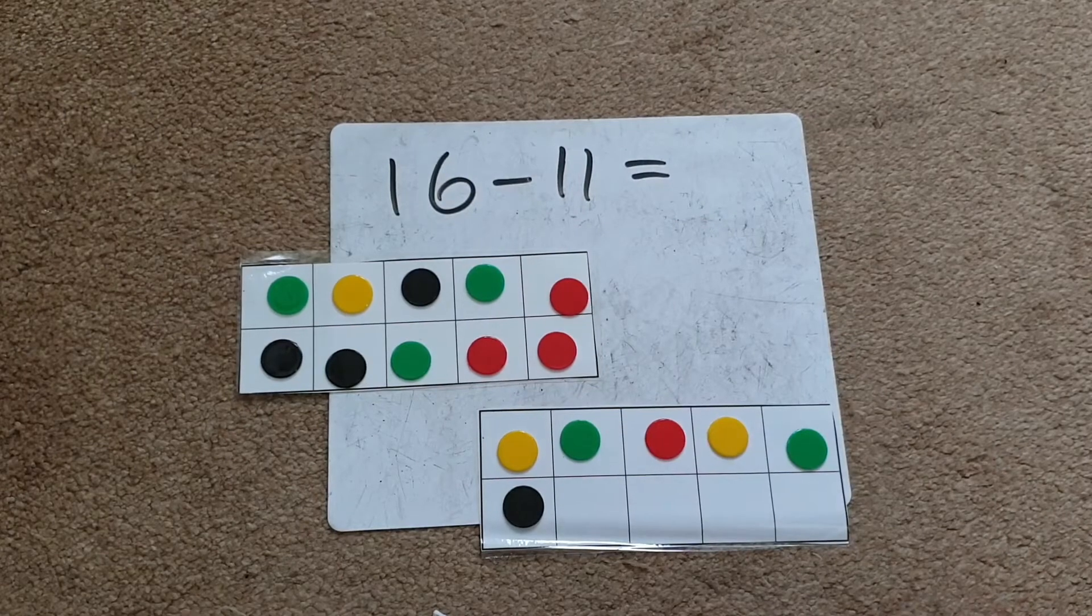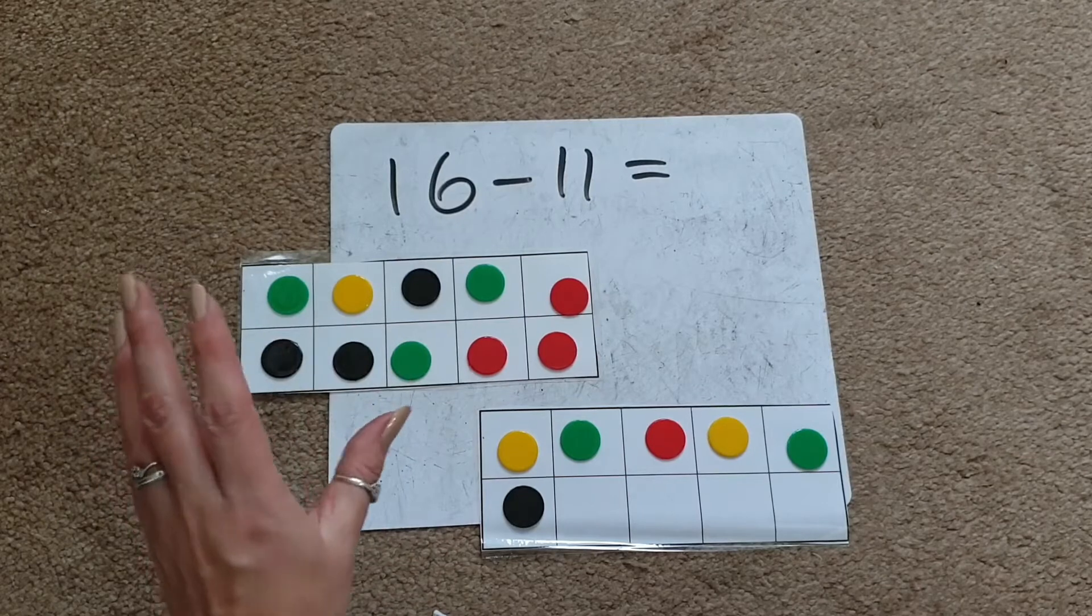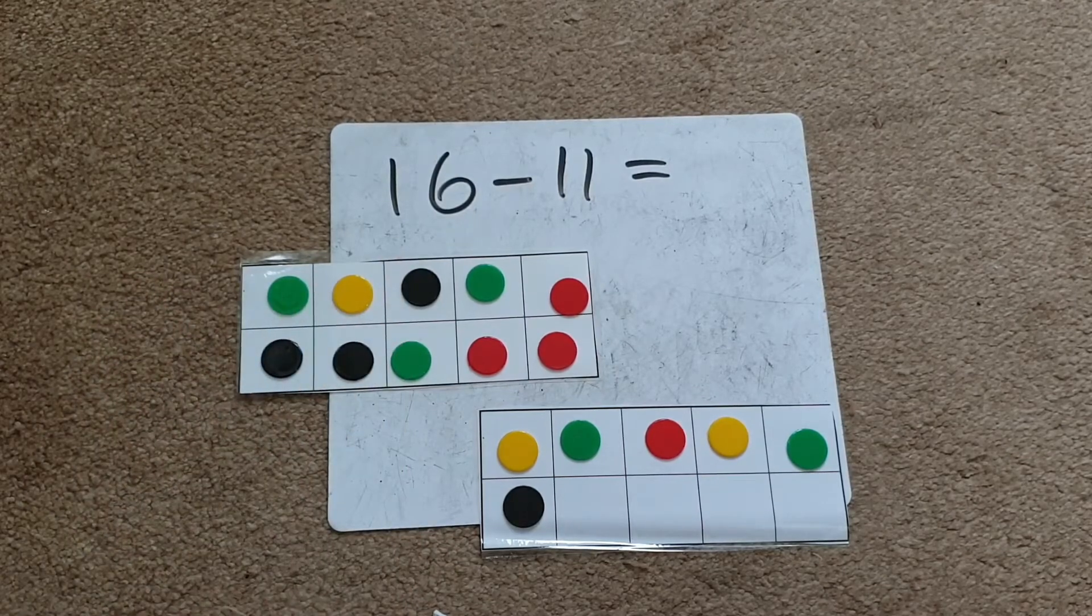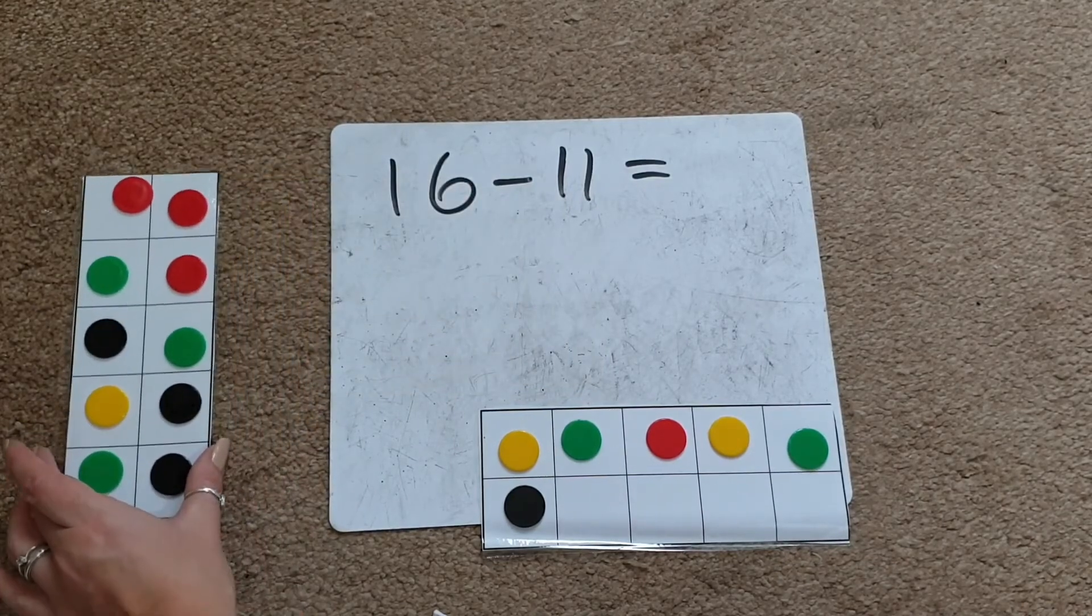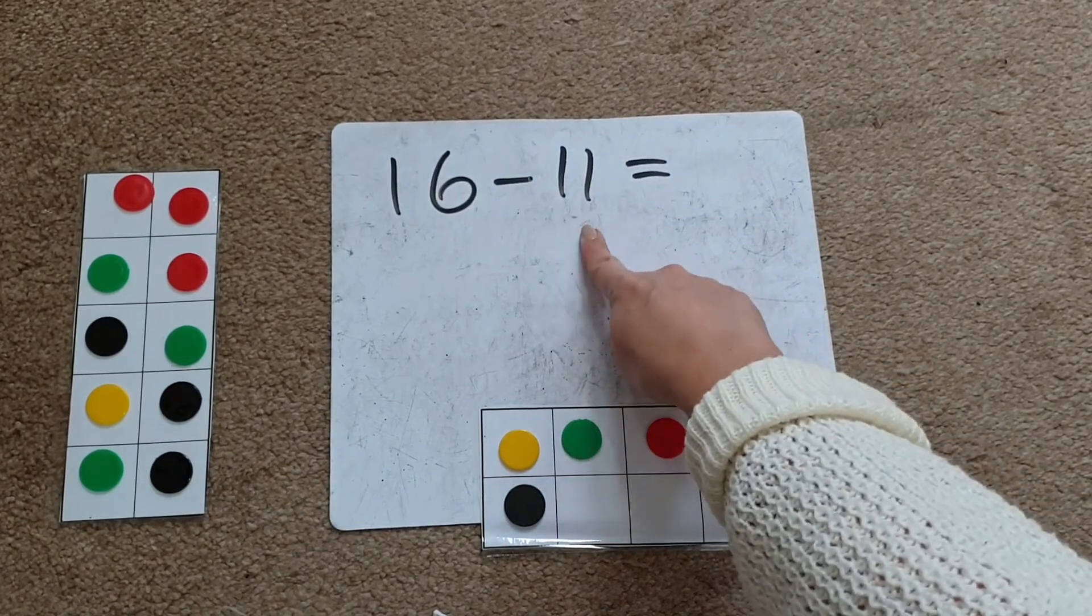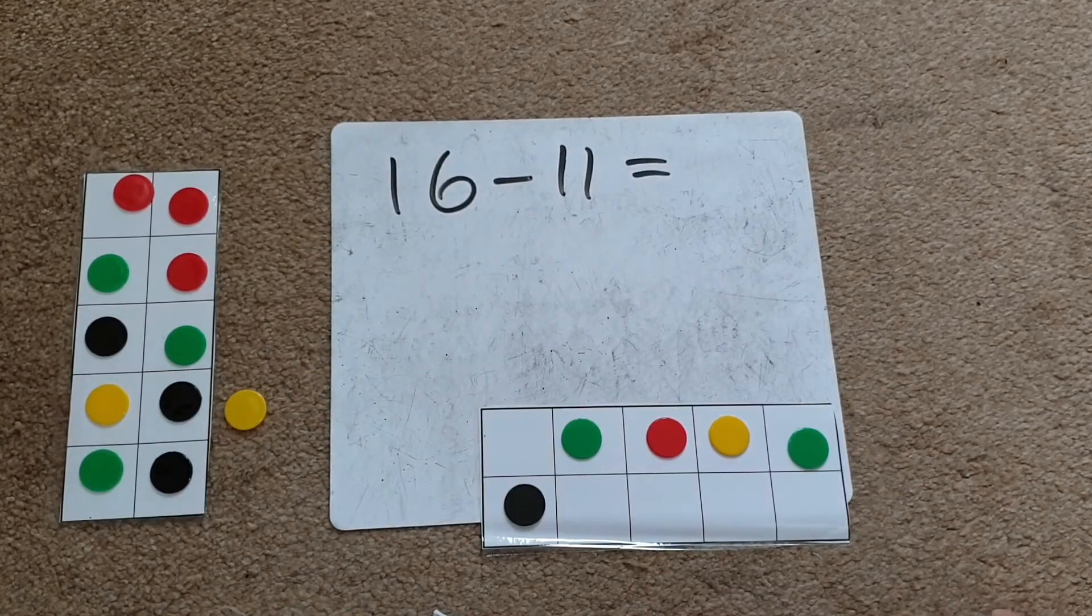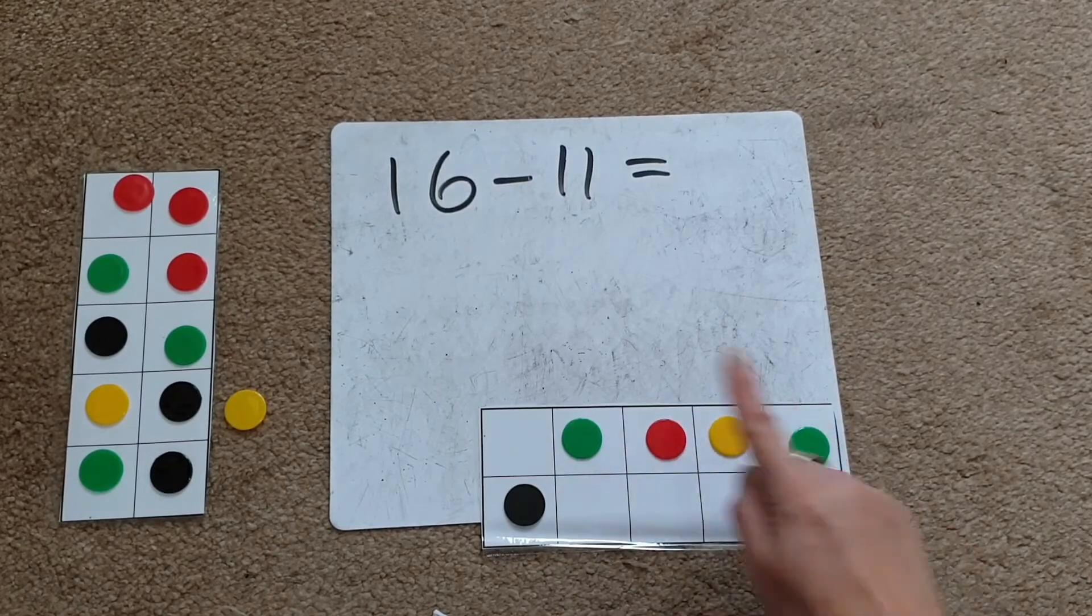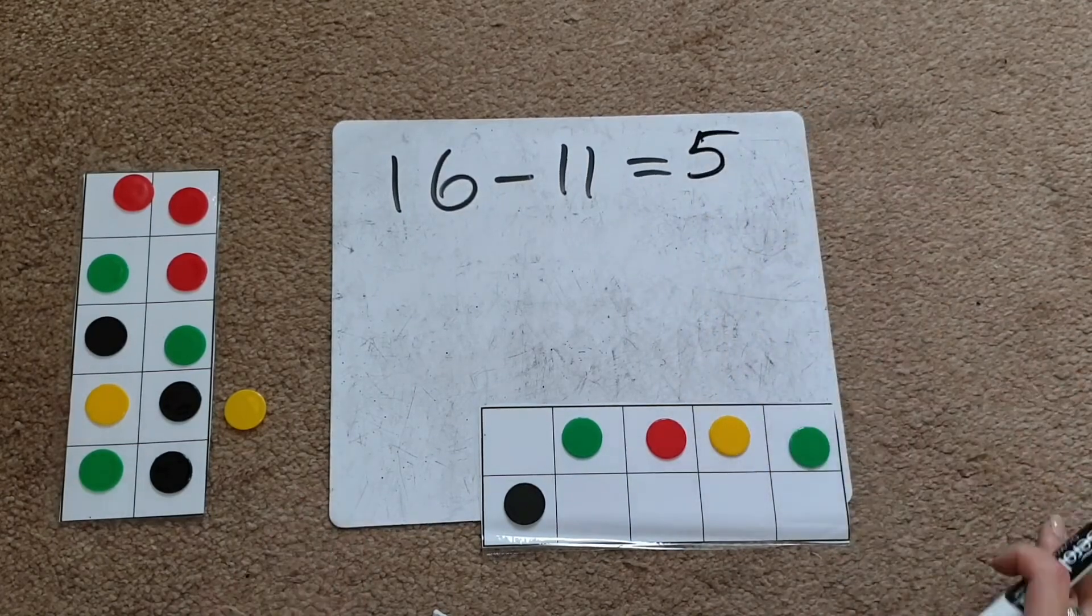Now we're taking away 11. This is a good opportunity to discuss that a full 10 frame equals 10. Instead of taking away 11 one by one, we can take away the entire 10 frame - that's 10 removed. Then we take away one more. We can count what's left: 1, 2, 3, 4, 5. So 5 is our answer, and you would have the children write it in.